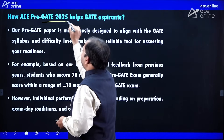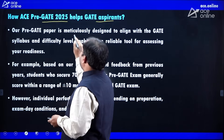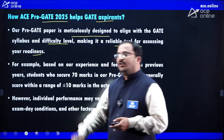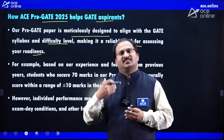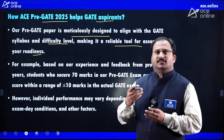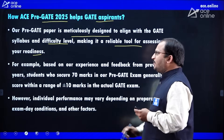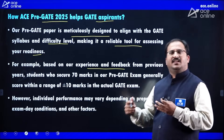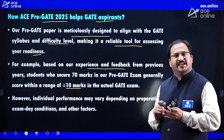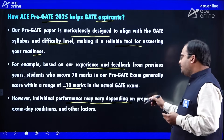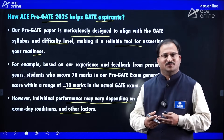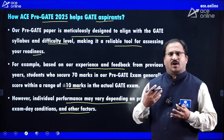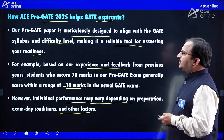Our Pre-GATE paper is meticulously designed to align with the GATE syllabus and difficulty level, making it a reliable tool for assessing your readiness. Our senior and expert faculty members prepare the question paper accordingly. Based on our experience and feedback from previous years, students who score around 70 marks in our Pre-GATE examination generally score within a range of plus or minus 10 marks in the actual GATE examination. However, individual performance may vary depending on preparation, exam day conditions, and other factors.